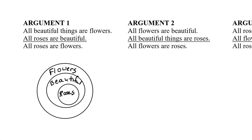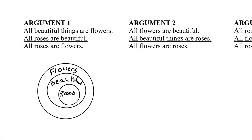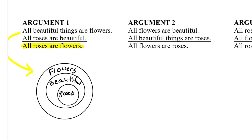To determine if our argument is valid, we need to focus on the conclusion: 'all roses are flowers.' Does our Euler diagram, drawn based only on the premises, guarantee that all roses are flowers? In other words, is the rose circle inside of the flower circle? The answer is yes. So this is a valid argument — the reasoning was correct.